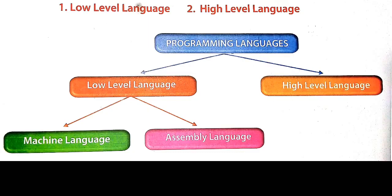There are two types of programming languages: the first is low-level language and the second is high-level language. Here you can see the diagram of computer languages. Programming languages are divided into two types: low-level language and high-level language. Low-level language is further classified into two types: machine language and assembly language. A language which can be understood by a machine is called a low-level language.